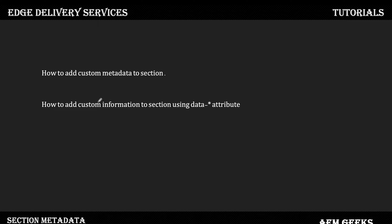So, how to add additional classes to a particular section and how to add specific additional information using data attributes — we use a section metadata block for that. You don't need to create this block from scratch; it's already available. You just need to add it inside each section. Let's have a demo and see how it's done.